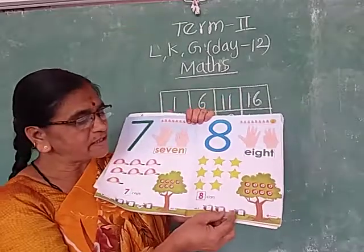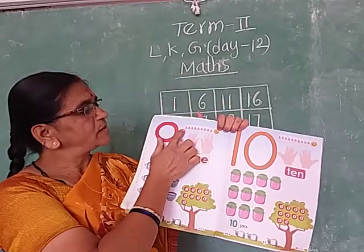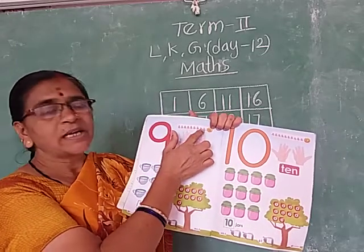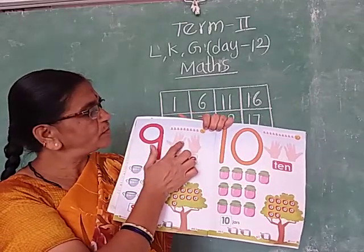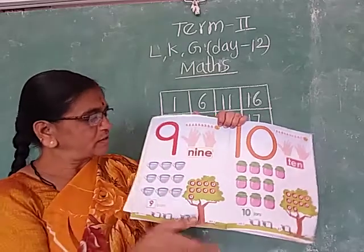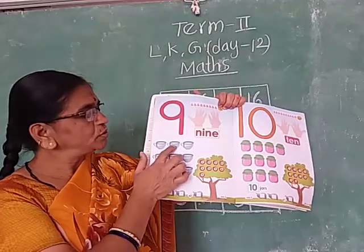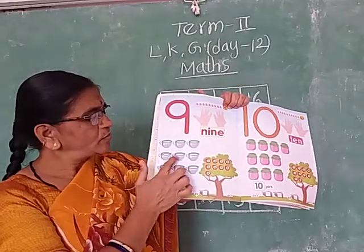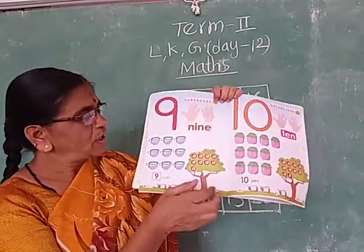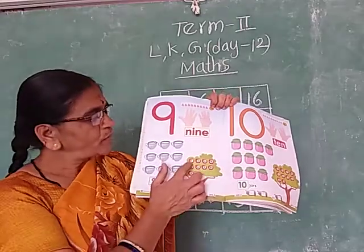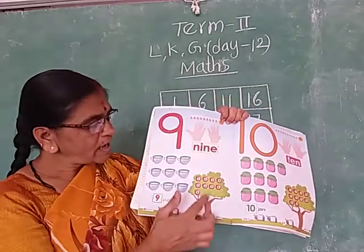Number 8 is there. Next number 9. 9 butterflies: 1, 2, 3, 4, 5, 6, 7, 8, 9 — 9 butterflies. Count the fingers: 1, 2, 3, 4, 5, 6, 7, 8, 9 — 9 fingers. What are these? These are cups. Count the cups: 1, 2, 3, 4, 5, 6, 7, 8, 9 — 9 cups. Count the apples: 1, 2, 3, 4, 5, 6, 7, 8, 9 — 9 apples.